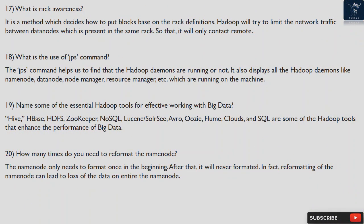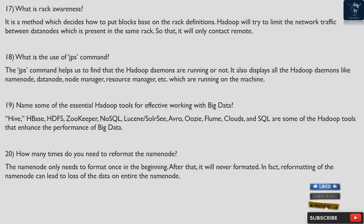Question 17: What is rack awareness? It is a method which decides how to place block copies on rack definitions. Hadoop will try to limit the network traffic between data nodes which are present in the same rack, so that it will only contact remote nodes when necessary.